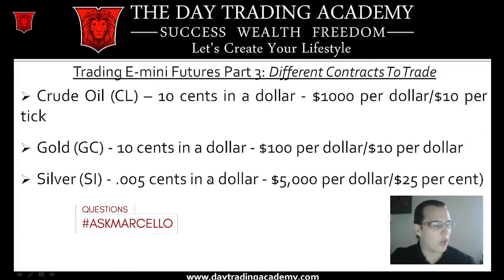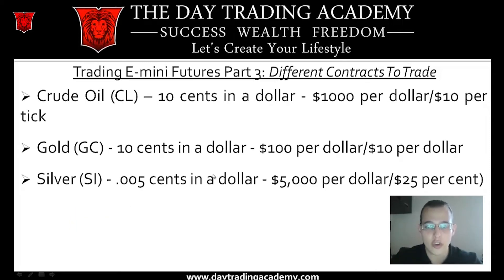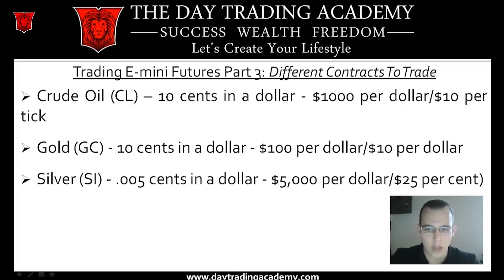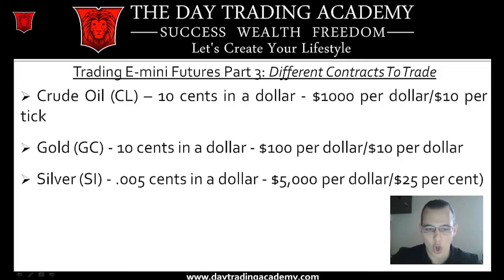The following ones aren't quote-unquote E-mini futures, but they are futures you can trade — these are the commodities. The crude oil contract, which a lot of people have been trading recently because of the huge volatility we've seen, is $1,000 per dollar and then $10 per tick. Gold and silver — I'm going to talk about those here in just a moment.